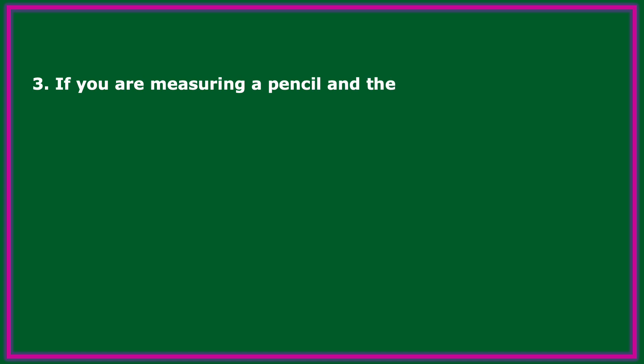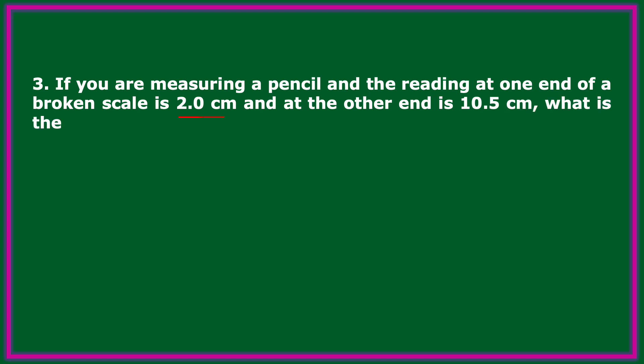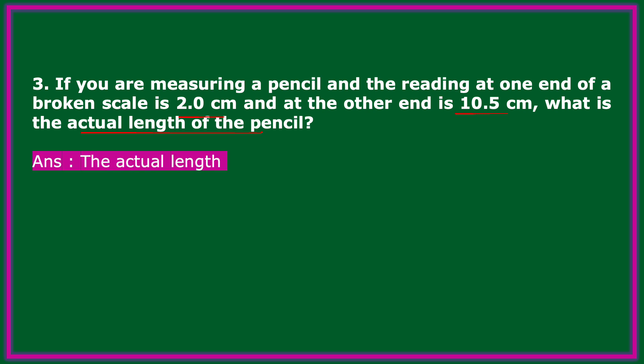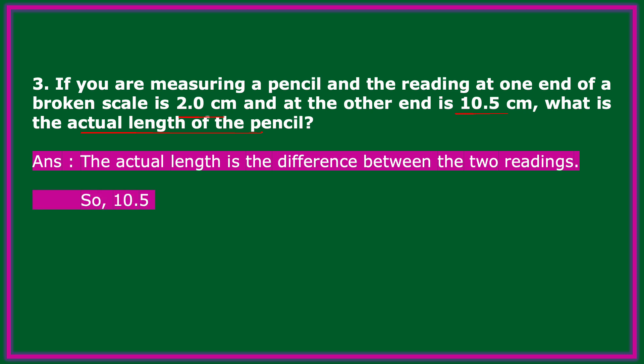If you are measuring a pencil and the reading at one end of a broken scale is 2.0 cm and at the other end is 10.5 cm, what is the actual length of the pencil? The actual length is the difference between the two readings: 10.5 cm minus 2.0 cm equals 8.5 cm. This is the actual length of the pencil.